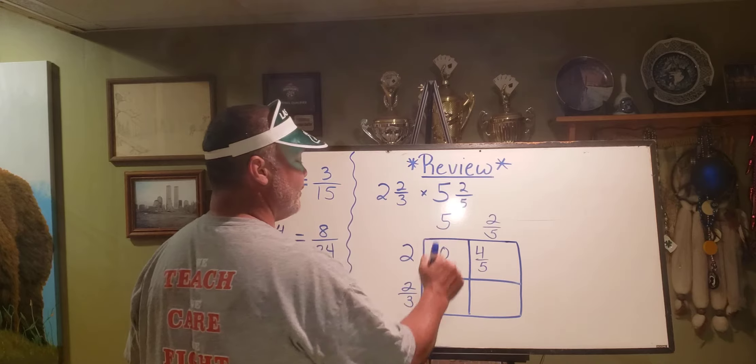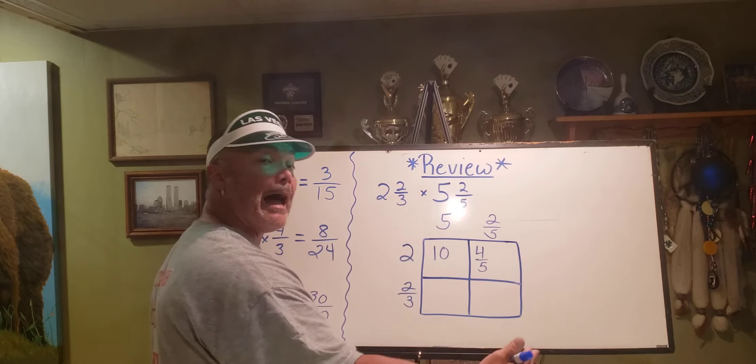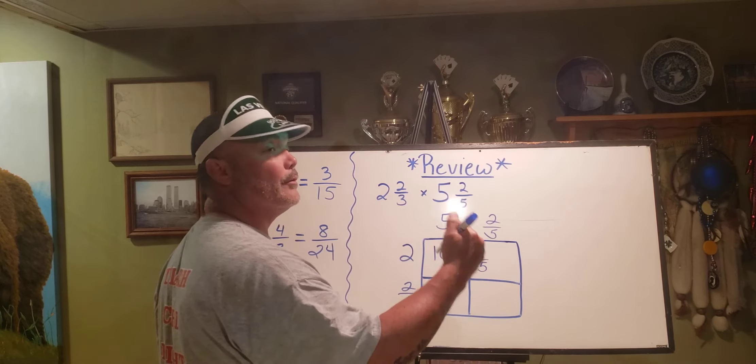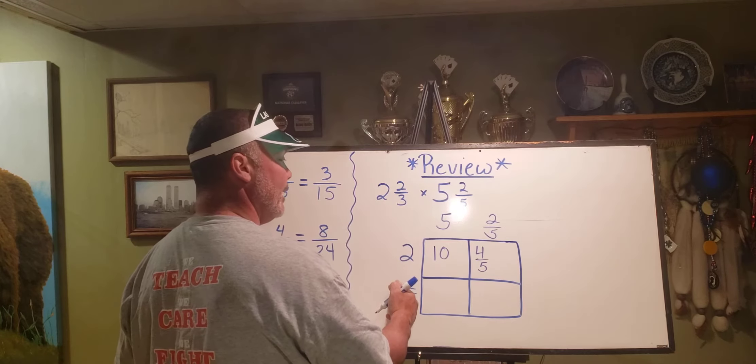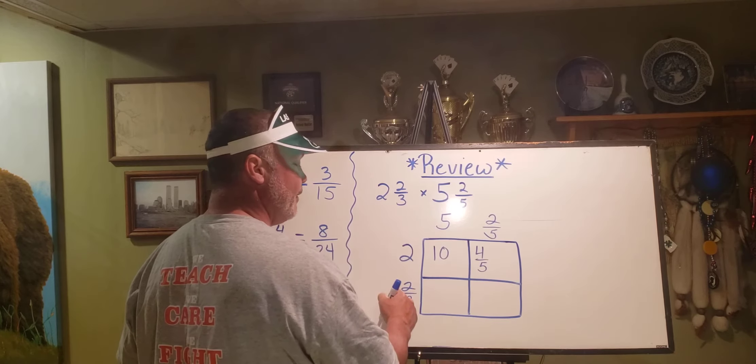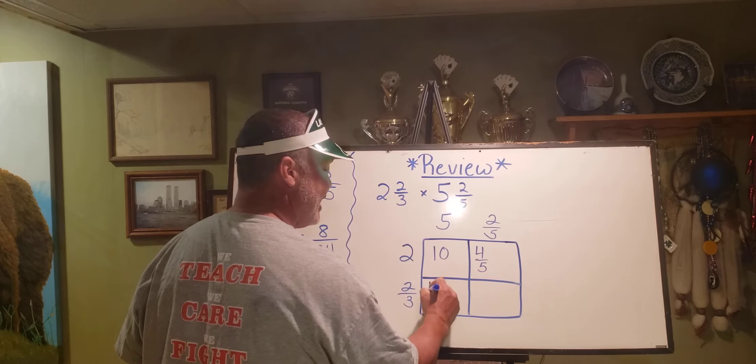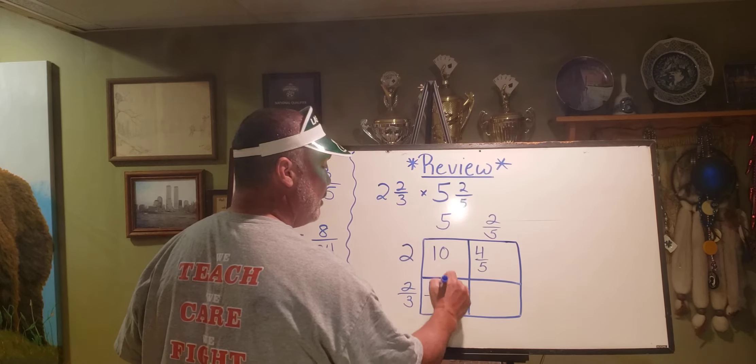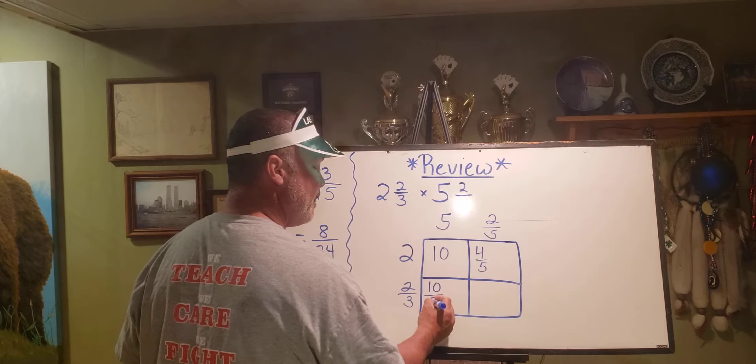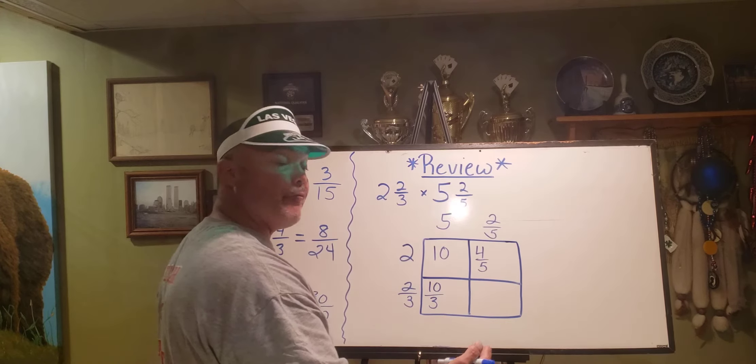Two thirds times five, well that's five copies of two thirds, or two thirds five times. So again, five over one would be five times two is ten, one times three is three.